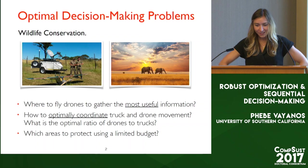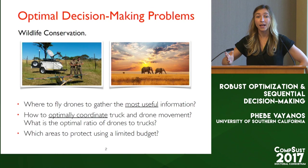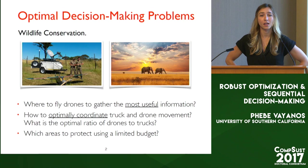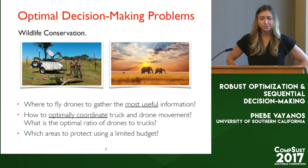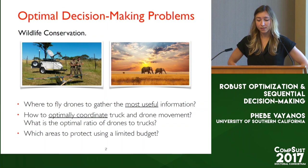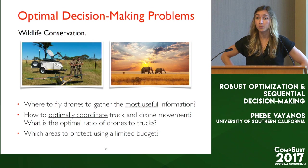What's robust optimization and adaptive or adjustable robust optimization all about? Well, it's about helping you make good or optimal real-world decisions. In the context of this workshop, maybe some problems that come to mind: for example, say I'm trying to decide which areas I should be protecting using a limited budget, in a way that I can protect as many species as possible, or at least a certain number of animals of a given species.